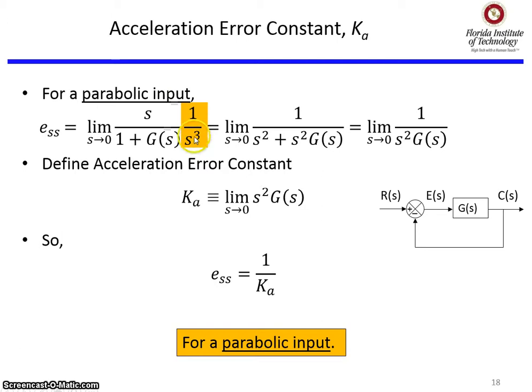We put in for R(s) 1 over s cubed, because that's the Laplace transform for the parabolic input. Run the math, and lo and behold, we get s squared left over in the denominator. So I'm going to define my error constant as the limit as s goes to zero of this denominator, which is s squared G(s). So in essence, I can replace my formula now for steady-state error with just 1 over Ka, as I've defined Ka up here. And again, this is only for the parabolic input.